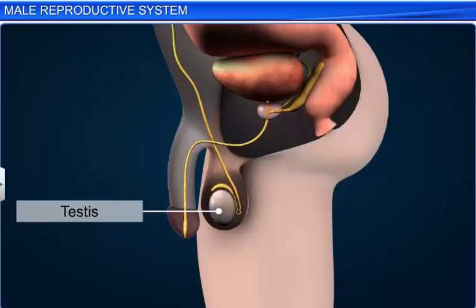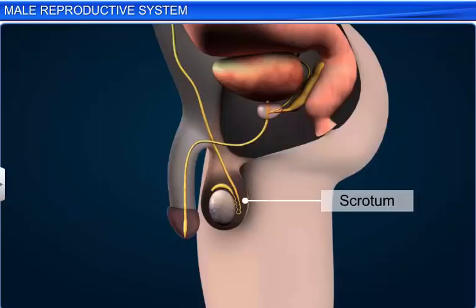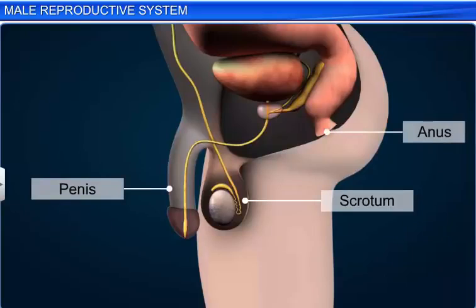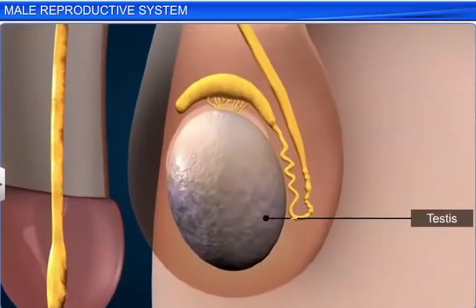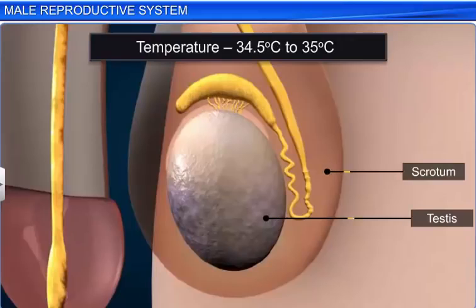The testes are covered by a sac-like protuberance of skin and muscles called the scrotum. The scrotum lies between the penis and the anus. The testes need to be at a temperature of 2 to 2.5 degrees less than the body temperature to produce sperms. Hence, the scrotum is outside the body and has a temperature lower than the body.